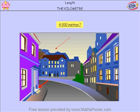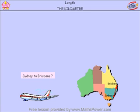What about if we wanted to know how far from my house to my friend's house in the next suburb, about 4,000 metres away? That's a bit hard to imagine or picture, isn't it? What about from Sydney to Brisbane? It's 1,020,000 metres from Sydney to Brisbane. Can you picture 1,020,000 pieces of one metre string? I can't. It's very hard to imagine that many metres.